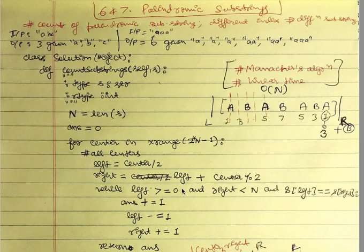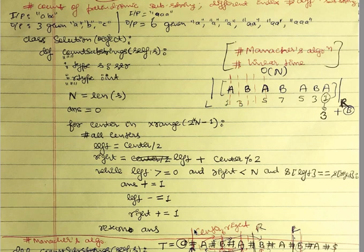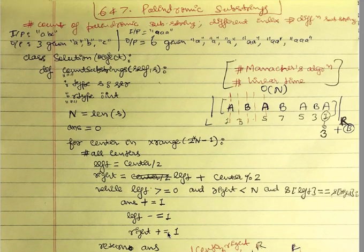We keep expanding depending on alternate positions. While left is non-negative and right is less than the length of the string, we compare the left and right characters. If they are the same we keep incrementing the answer. The answer represents the count of matching palindromic positions. We expand left by decrementing its index and expand right by incrementing the right index, then return the answer.